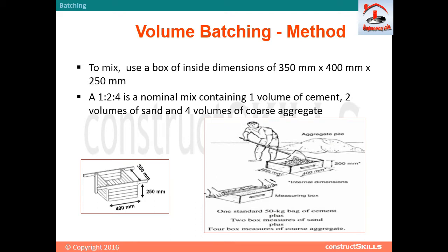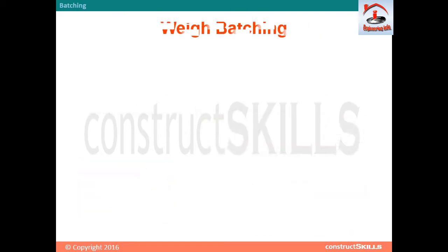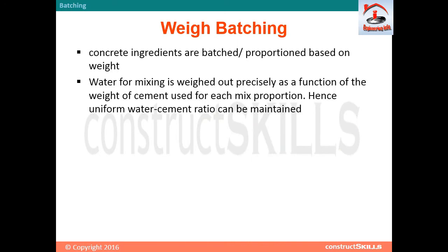In the volume batching method, a box of inside dimensions 350mm by 400mm by 250mm is used. A 1:2:4 nominal mix contains one volume of cement, two volumes of sand, and four volumes of coarse aggregate.